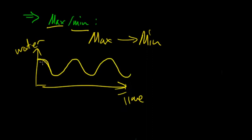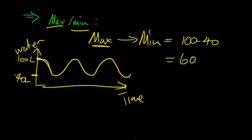So it went like that. And then they said, what is the biggest difference between the water? The maximum, let's say we can work out, is 100 liters, and then the minimum is 40 liters. So the difference between the maximum and the minimum, 100 minus 40 would equal 60 liters. So the biggest difference between the maximum and the minimum is 60 liters in the dam.